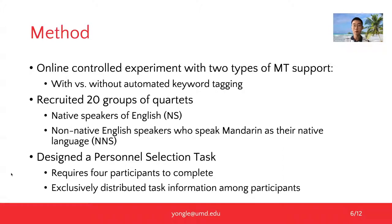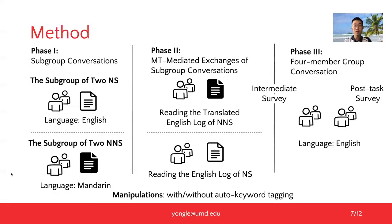To investigate our research questions, we designed an online controlled experiment with two types of machine translation support — with or without automated keyword tagging. We recruited 20 groups consisting of native and non-native English speakers to work on a personnel selection task. The online experiment is composed of three phases to mimic the real-world scenario in global teamwork.